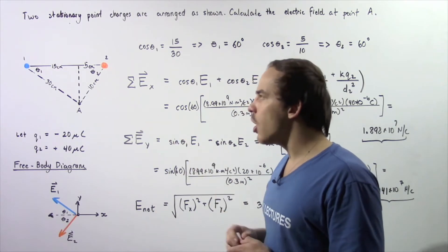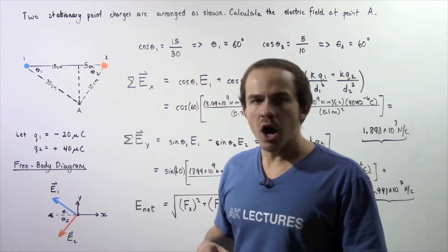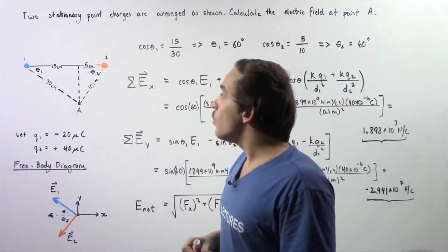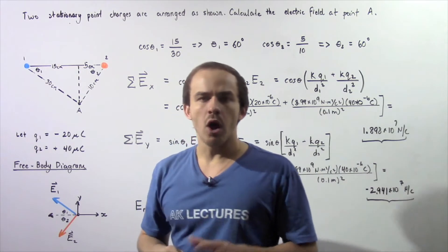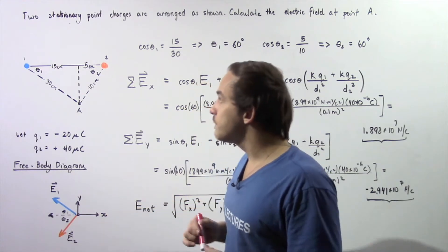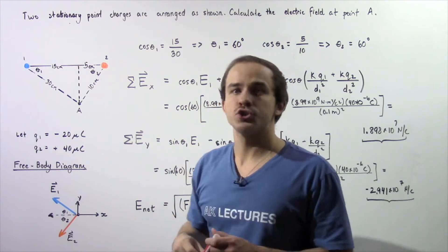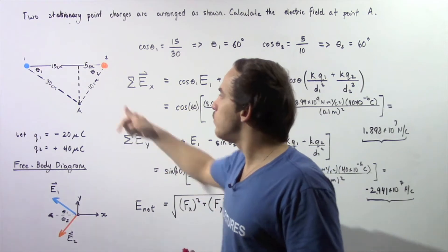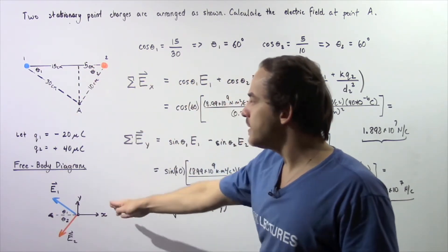Because we have two point charges, we'll have two electric fields. Electric field E1 is the electric field resulting from point charge 1. It will point from point A directly toward point charge 1, because that charge is negative. Electric field vector E2 is the electric field resulting from point charge 2. Because it has a positive charge, E2 points directly away from point charge 2, as shown in the free body diagram.